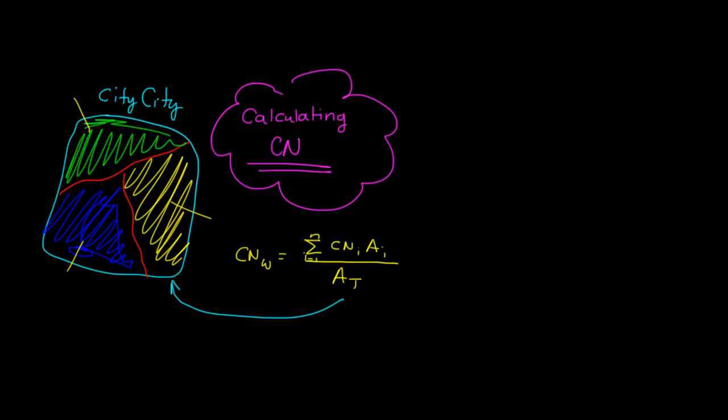So you have, let's say, area one, area two, and area three. Okay, so you'd have a curve number for this golf course, you'd have a curve number for this industrial area, and you'd have a curve number for this residential area. Okay, and you multiply each curve number by its own area, you add them all together, and you divide by the total area to get the curve number of the city.